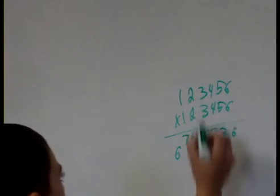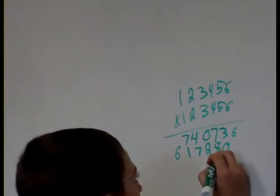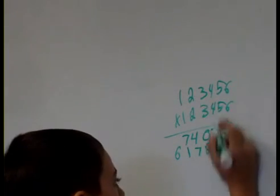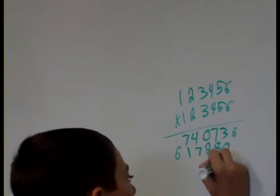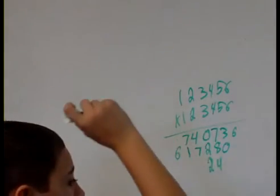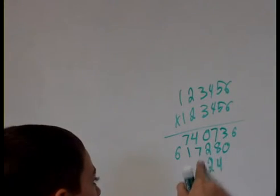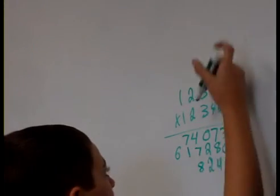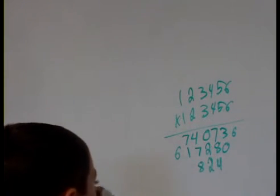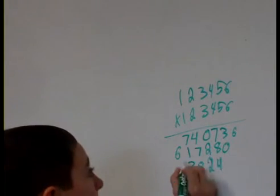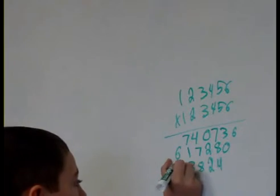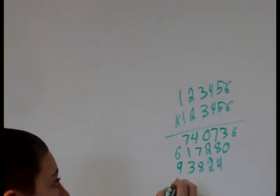And then you go down here, and then you start it with the 4. And then, that's 6 times 4 is 24. So, 4 times 4 is 16, plus the 2 is 18. And then, 4 times 3 is 12, plus the 1 is 13. And then, 4 times 2 is 8, plus the 1 is 9. And then, 4 times 1 is 4.